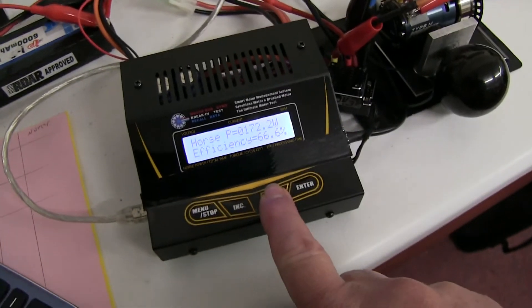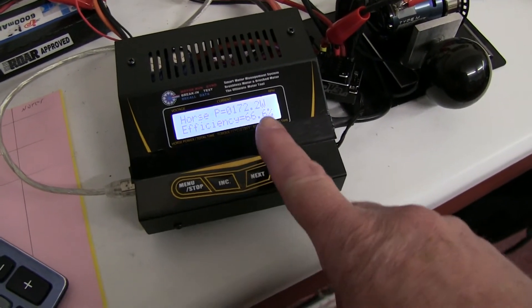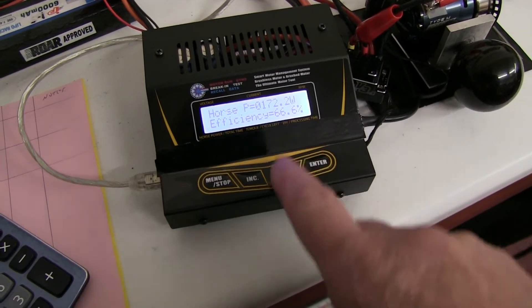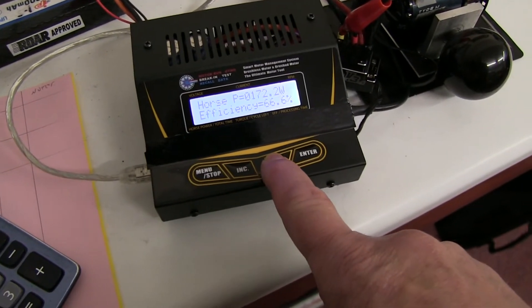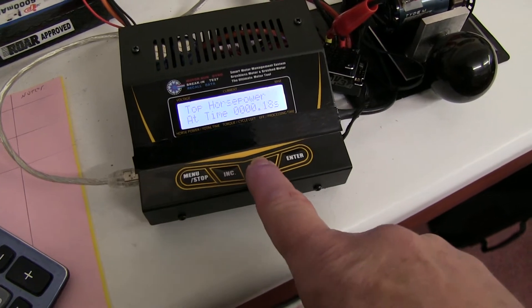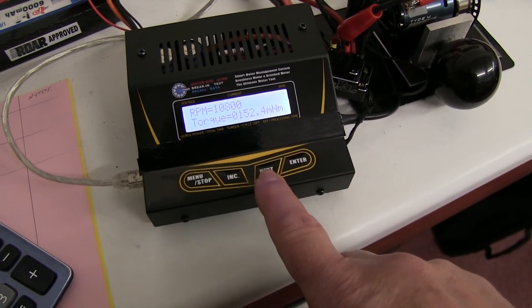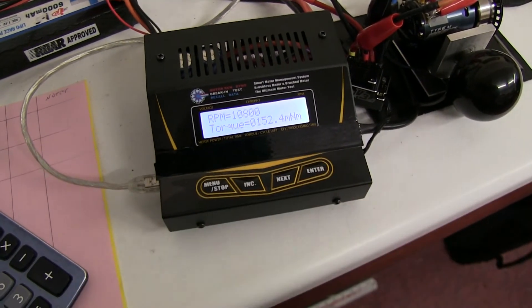I've loaded these results into the computer. They're very similar, horsepower 172 watts, maximum efficiency 66%. And the torque was 152, around 10,800.